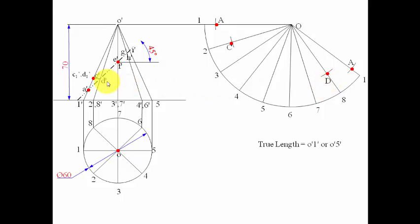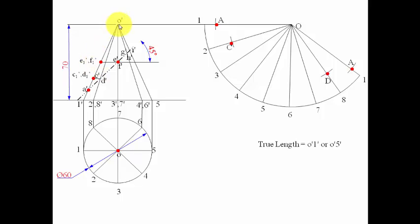For points E and F on generators O3 and O7, these also don't lie on the true length. We project them to get E1-dash and F1-dash. With O as center and radius to E1-dash/F1-dash, we cut arcs at positions 3 and 7 to get points E and F respectively.